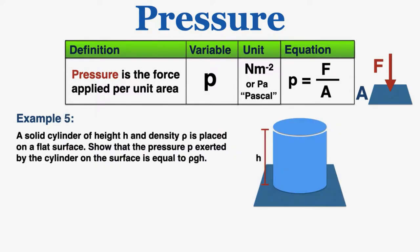Example number five has some more complex geometry, so I want to show you how that works. A solid cylinder of height h and density ρ is placed on a flat surface. Show that the pressure p exerted by the cylinder on the surface is equal to ρgh.